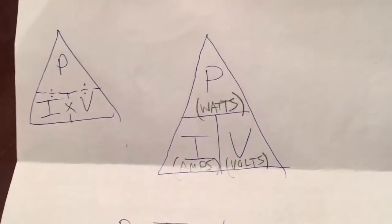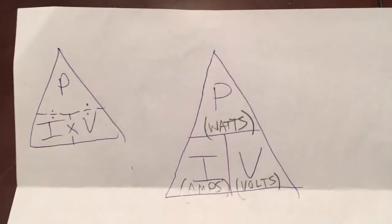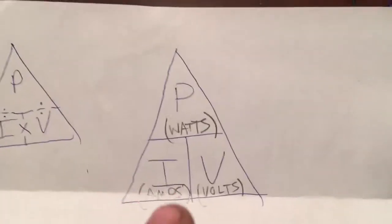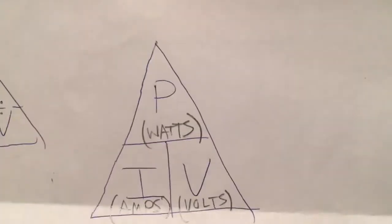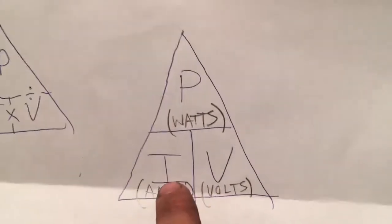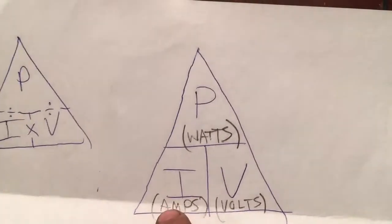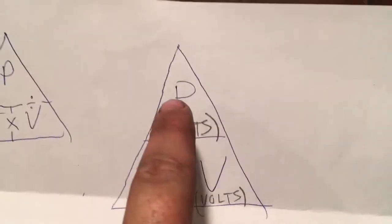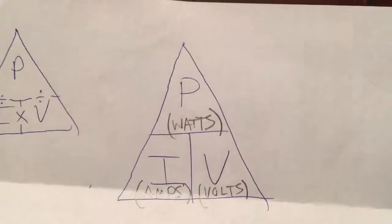I'm going to show you a real quick example. It's really simple. This is called the Ohm's Law Pyramid. Basically, I stands for impedance, and that actually stands for amps — don't ask me why they do that, it's kind of confusing. And P stands for power, but that is watts.